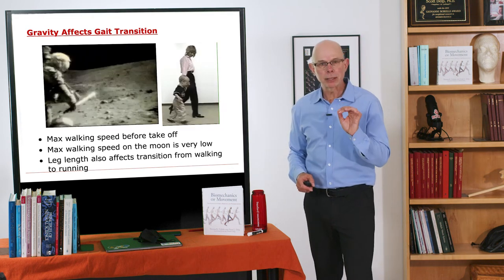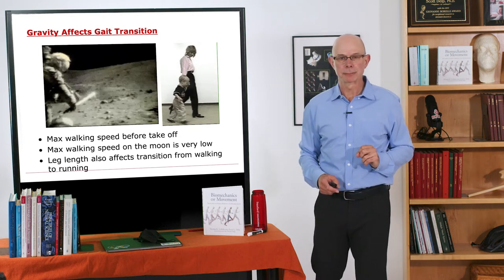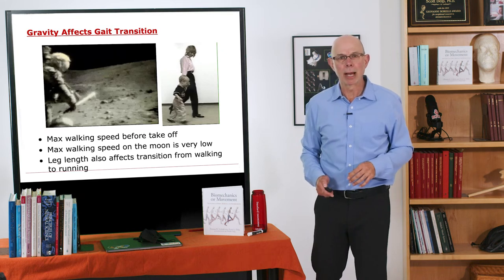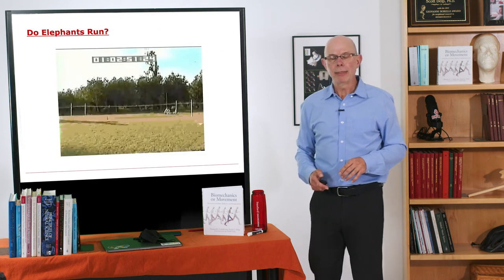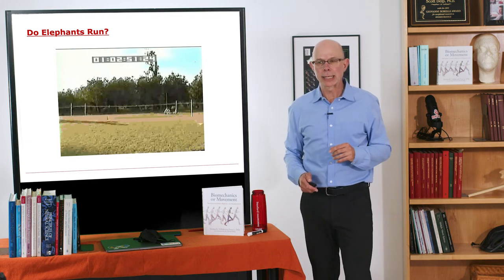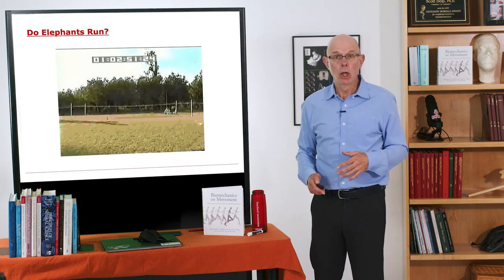So energy affects gait transitions, and gravity also affects gait transitions. I have a couple other concepts to think about with locomotion, and that is the walk-to-run transitions for various animals. A key question is, as big animals get big, could they run?